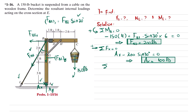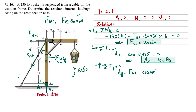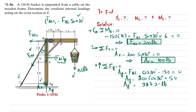For finding Ay, we apply the equilibrium condition: sum of all forces along the y-direction equals zero, taking upward force as positive. We have three forces: Ay, the y-component of FBI, and 150 pounds. So Ay minus FBi times cos 30 degrees minus 150 equals zero. With FBI equal to 200, Ay equals 200 times cos 30 degrees plus 150, which gives 323.21 pounds.